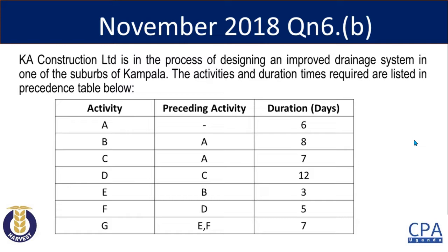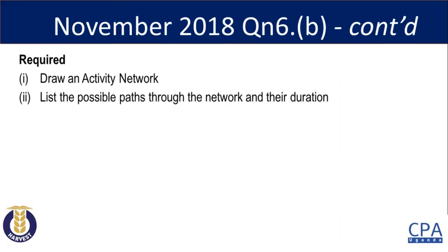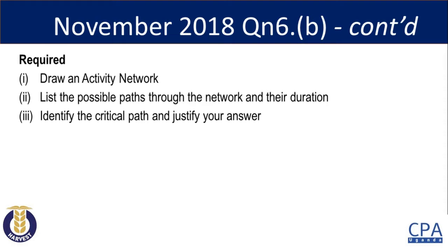We are required to draw an activity network, to list the possible paths through the network and their durations, and to identify the critical path and justify our answer. In the previous session I explained what preceding activities are and took you through the rules of drawing networks. However, we shall still go through the rules again as we draw this activity network, indicating which rule applies for each particular approach.